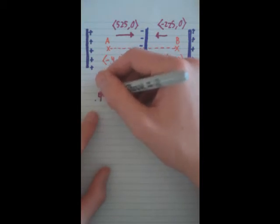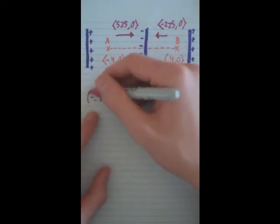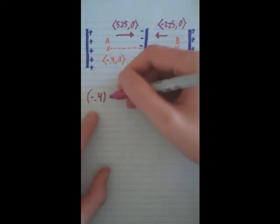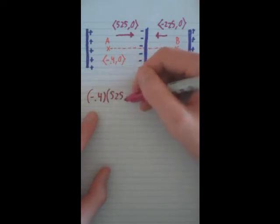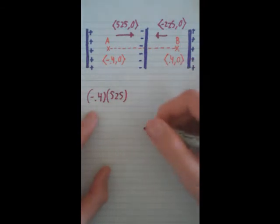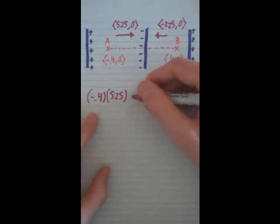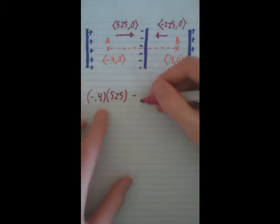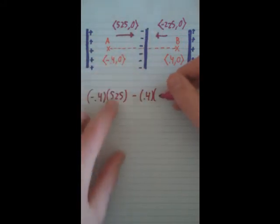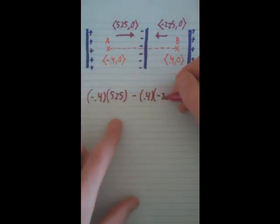So for negative 0.4 meters, the electric field is going to be 525. And then we subtract it because it's going to be going the other way. For 0.4, it's going to be negative 225.